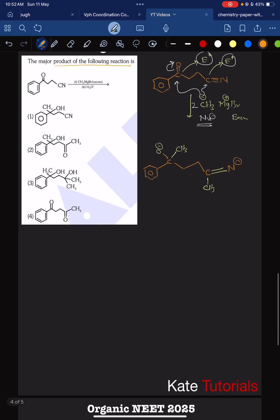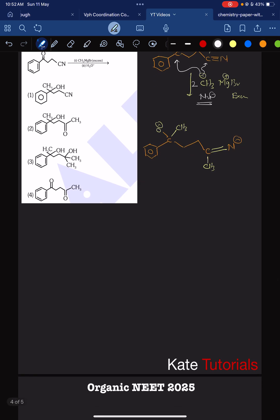So this is what we get. Excess, further this Grignard reagent will not react with this because this is electron rich and Grignard reagent CH3 minus MgBr plus is also electron rich. Further no reaction, so excess means it will stop here.